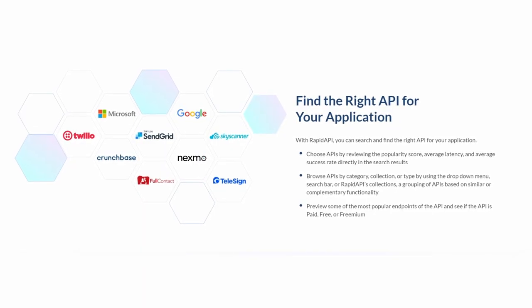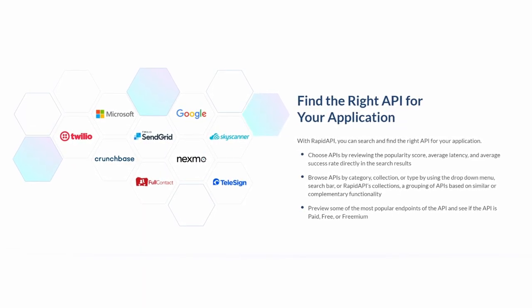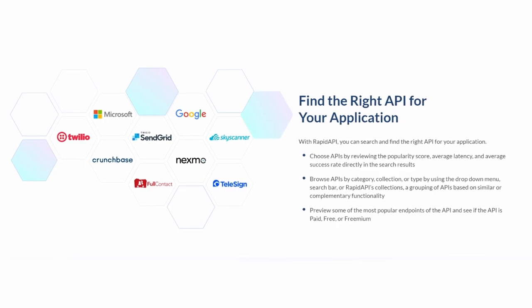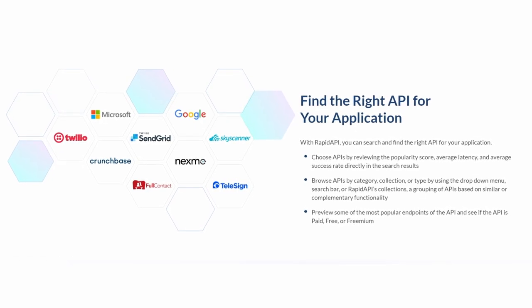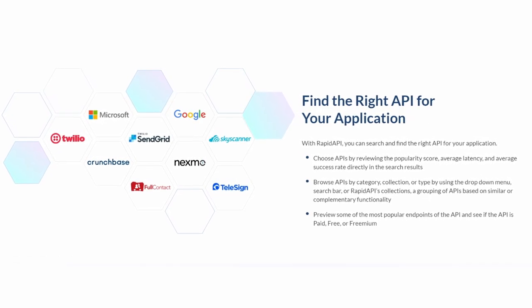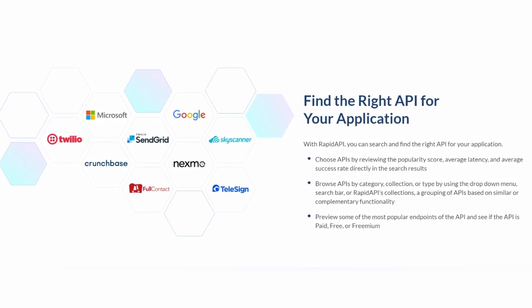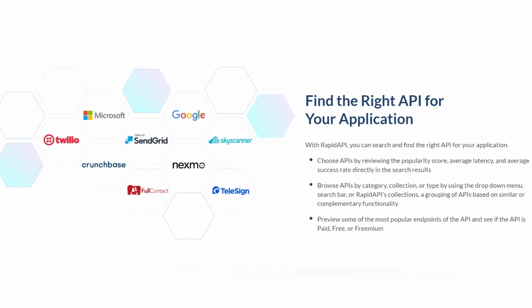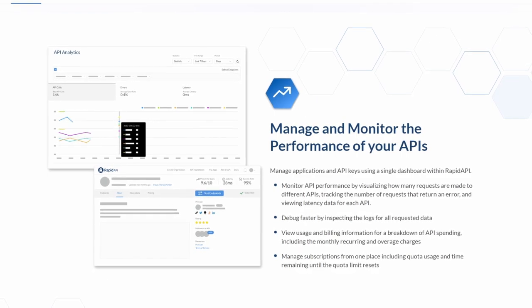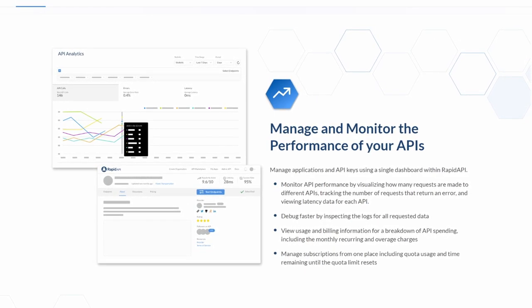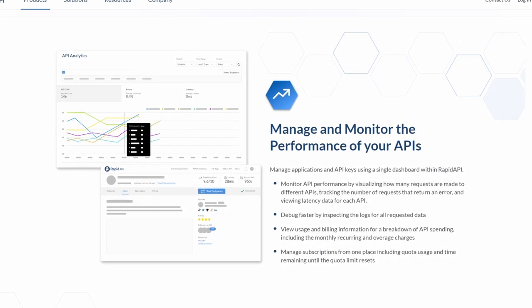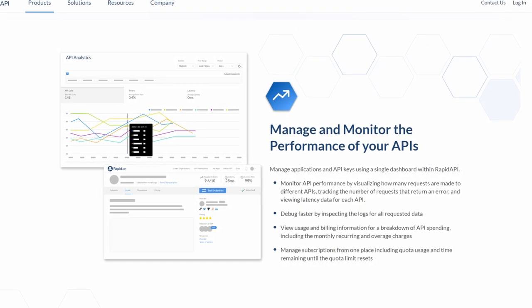Some of the top APIs included are from Twilio, Microsoft, Google, SendGrid, Skyscanner, Telesign, and many more. You can also manage and monitor the performance of your APIs from the dashboard.